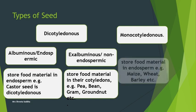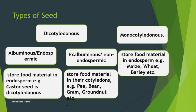Monocotyledonous seeds do have endosperm - usually all monocot seeds are endospermic seeds. Examples include maize, wheat, barley, and rice.